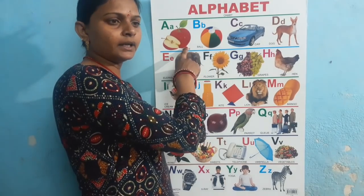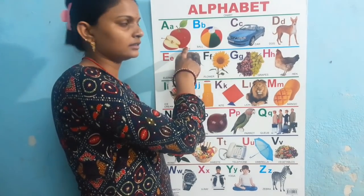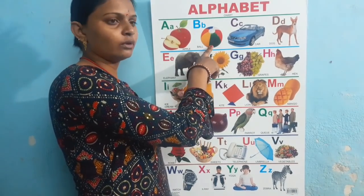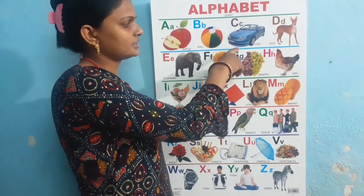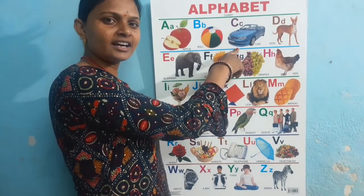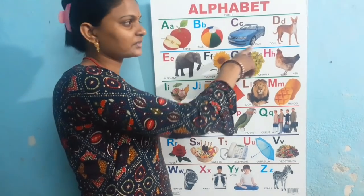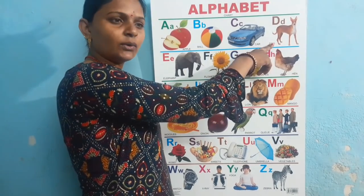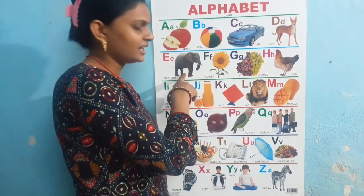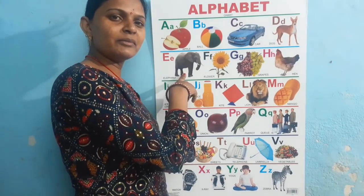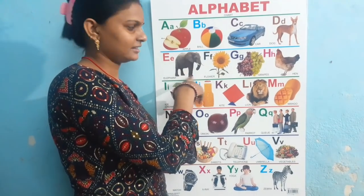A for apple, B for ball, B for car, B for dog, E for elephant.